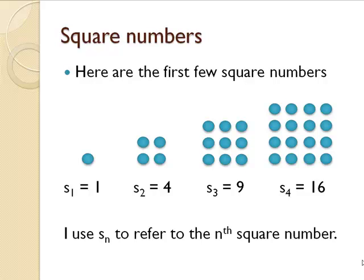Here I'm using the sequence S sub n to refer to the nth square number. Since 9 is the third square number, I'm calling that S sub 3 equals 9.